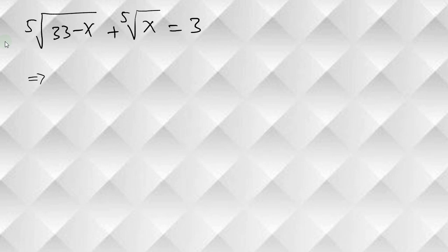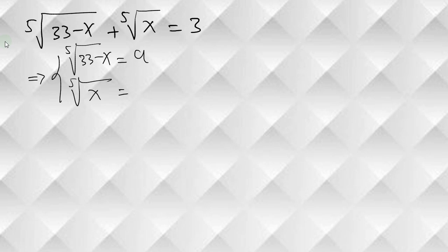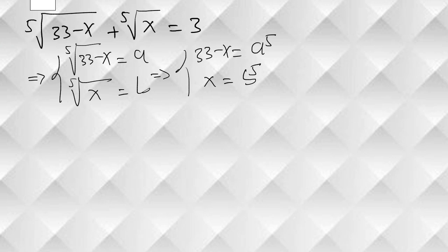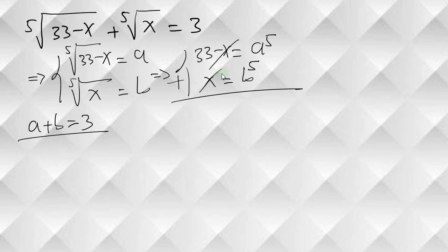Let's say this first root is equal to a and the second root is equal to b. Taking both sides to the power of 5, we get 33 minus x equals a to the 5, and x equals b to the 5. Then if we sum both sides, 33 equals a to the 5 plus b to the 5. Also, we know that a plus b equals 3. This is our first equation and this is our second equation.